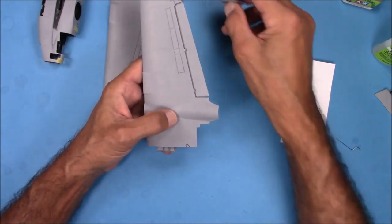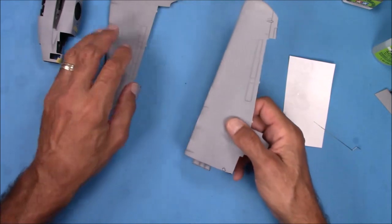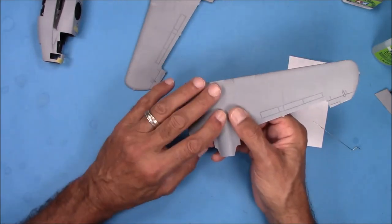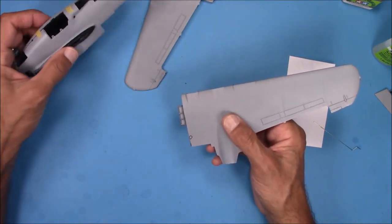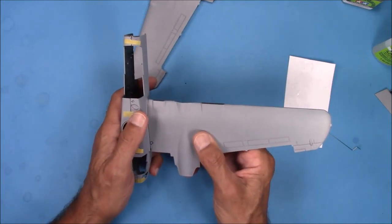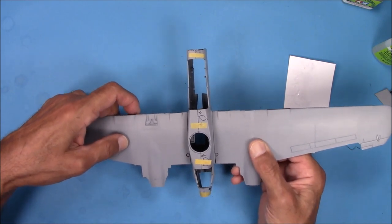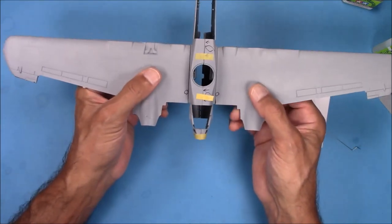The fit of the wings onto the fuselage is nice and tight, and here is one side, and here is the other side. The fit is nice and tight.